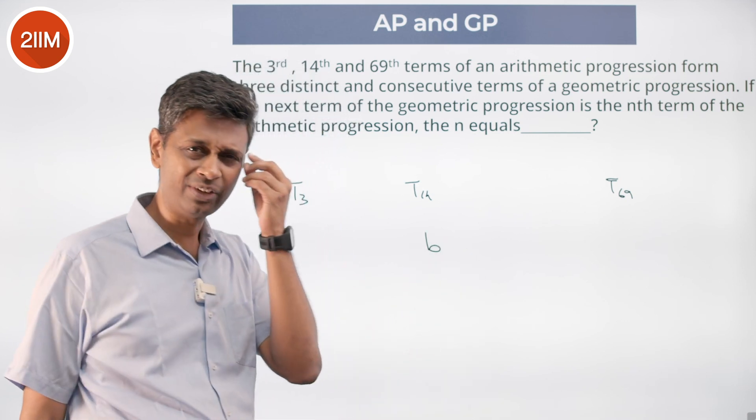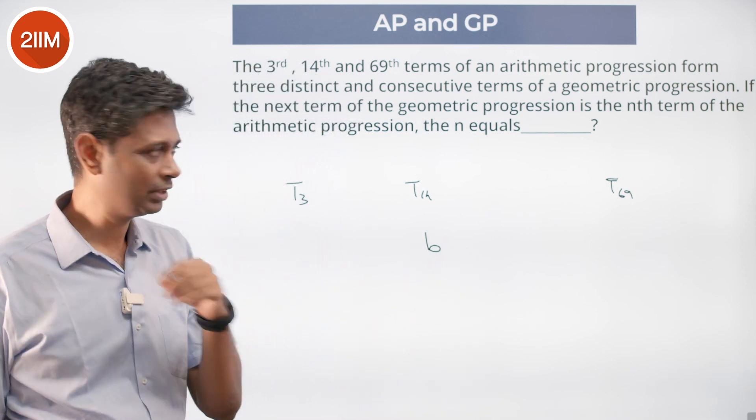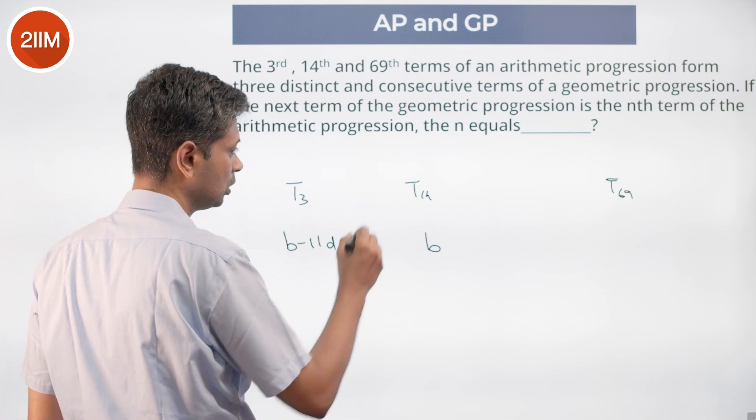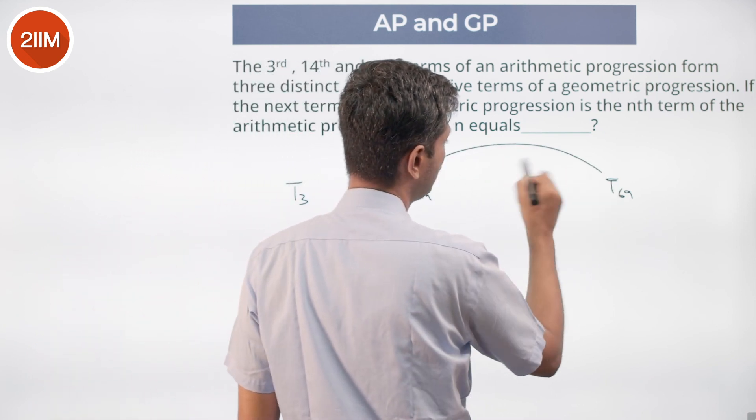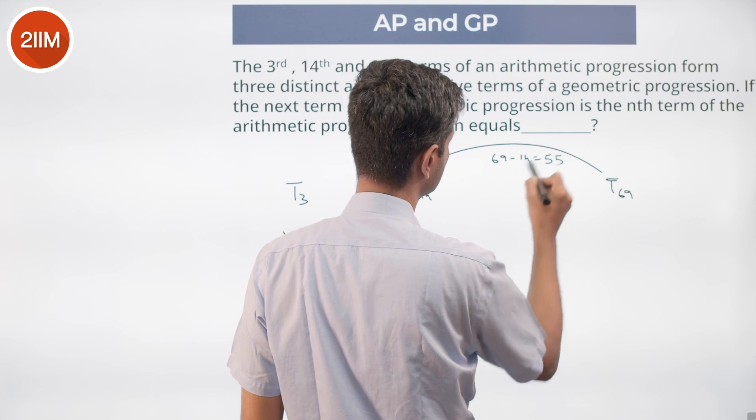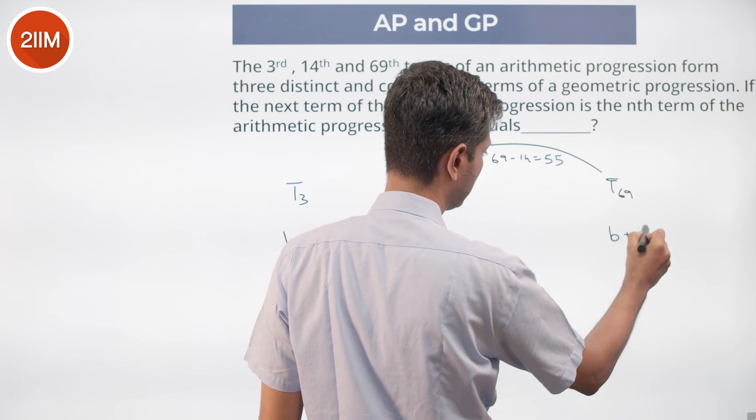Geometric progressions get defined very well with the middle term. From here 11 terms before, b minus 11d. From here 14 to 69, 69 minus 14 is 55. It is b plus 55d.